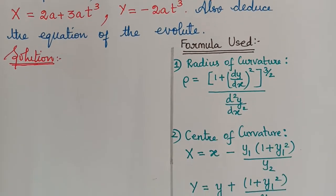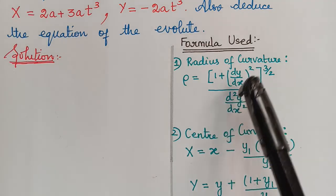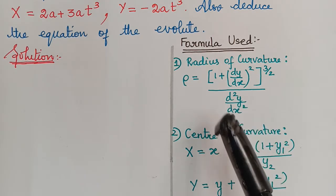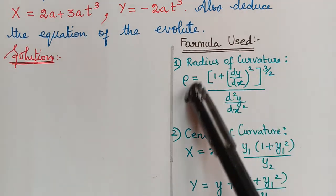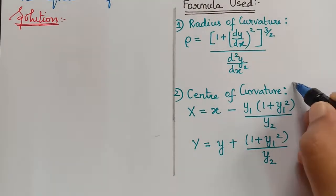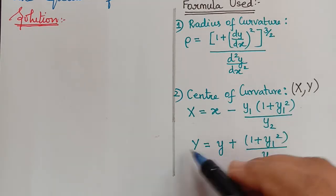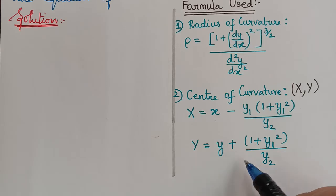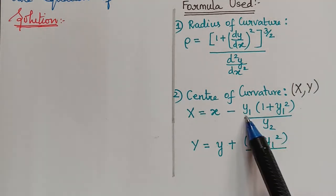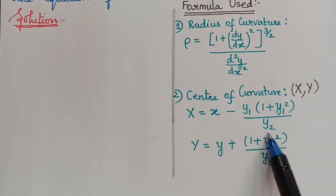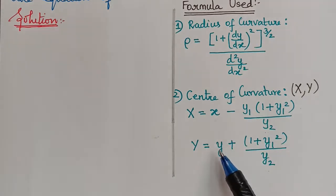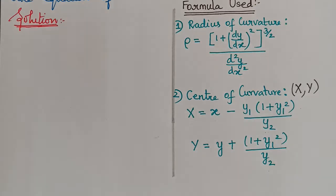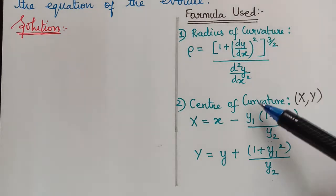The formula for radius of curvature is ρ = (1 + (dy/dx)²)^(3/2) divided by d²y/dx². We have already seen how to find the radius of curvature in previous videos. The center of curvature coordinates are: X = x - y₁(1 + y₁²)/y₂ and Y = y + (1 + y₁²)/y₂, where y₁ and y₂ are the first and second derivatives of y, and (x, y) is the point at which we find the center of curvature. Now we will learn the new concept called evolute.